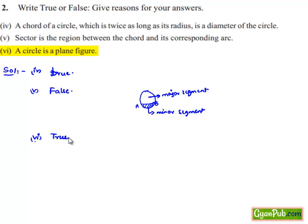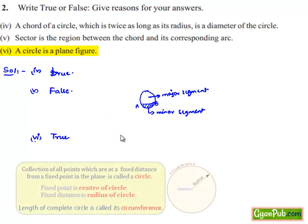It is true because by definition we can say that a collection of all points in a plane which are at a fixed distance from a fixed point in a plane is called a circle.